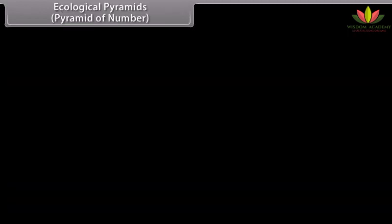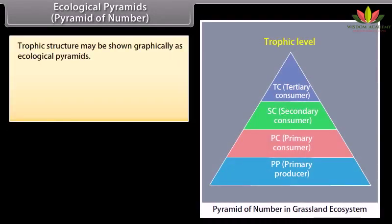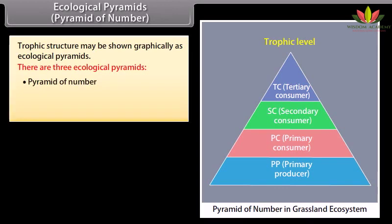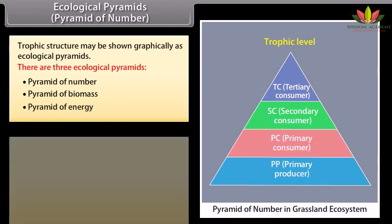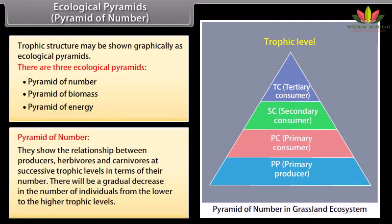Ecological Pyramids. Trophic structure may be shown graphically as ecological pyramids. There are three ecological pyramids: pyramid of number, pyramid of biomass, and pyramid of energy. The pyramid of number shows the relationship between producers, herbivores, and carnivores at successive trophic levels in terms of their number, with a gradual decrease in the number of individuals from lower to higher trophic levels.